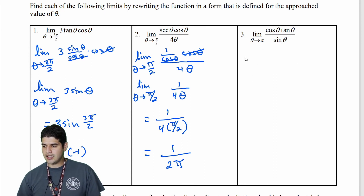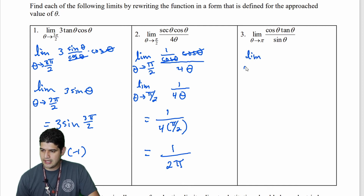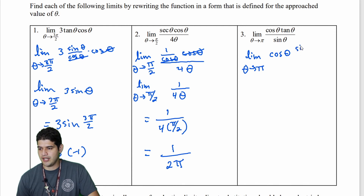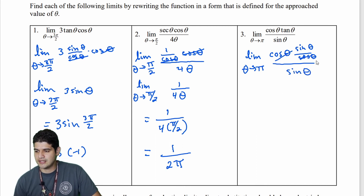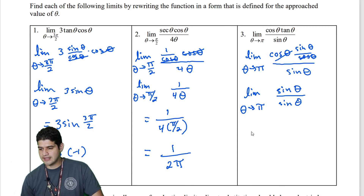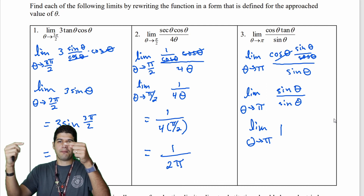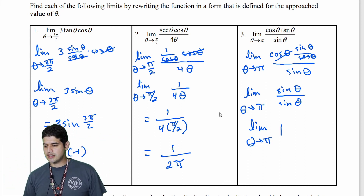For question 3, the limit as theta approaches π — let's rewrite using the quotient identity. We get the limit as theta approaches π of cos(θ) · (sin θ / cos θ) over sin θ. The cosines divide out immediately, leaving sin θ over sin θ, which simplifies to 1. So we have the limit as theta approaches π of 1 — a constant. As theta approaches π from either direction, the value stays 1, so the limit equals 1.